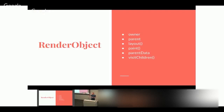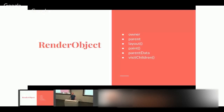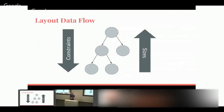There's a concept called parent data — a slot on a render object that the parent can use to store data. In other systems like the web, you can't put an inline inside a block because the block needs to store information that the inline doesn't have slots for, leading to anonymous render objects. We avoid that by having this parent data slot managed by the parent rather than the child. RenderObject defines the one-pass data flow: we walk the tree depth-first, passing constraints down and returning sizes up.